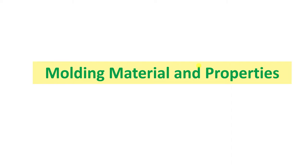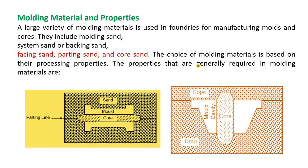Today we will see about molding materials and properties. Only a few molding materials are used, but with the help of those materials only we succeed in the molding process. The first one is sand, and the second is patterns. These two are very important and we are going to focus on them.